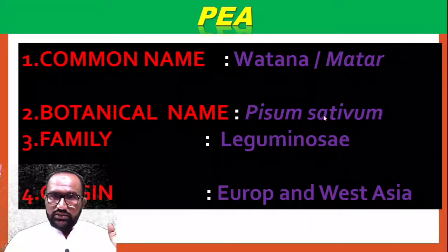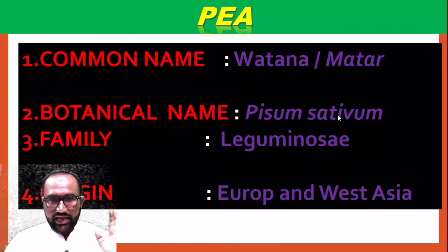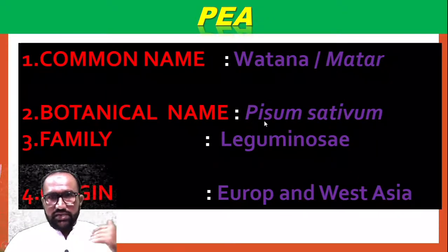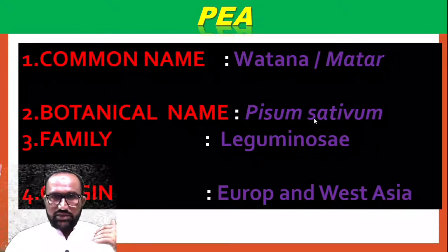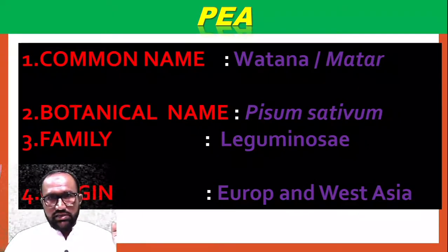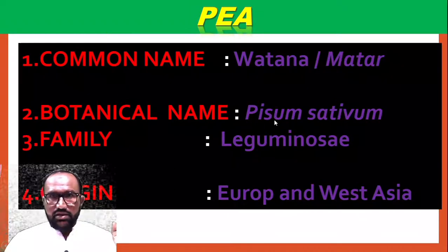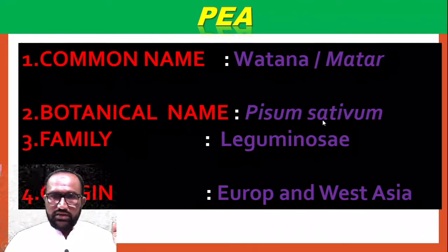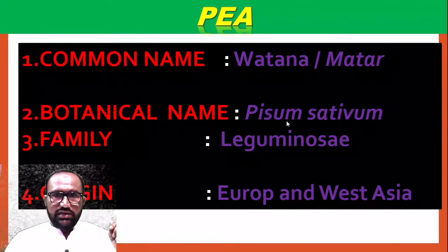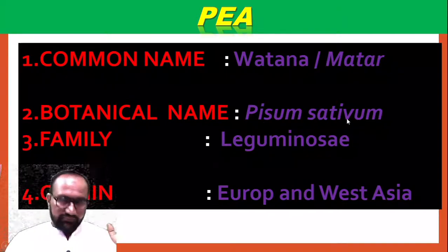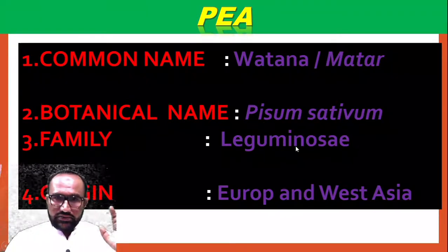Pisum is the genus name and sativum is the species. The genus name should be written in capital letters initially, and the species name in small letters. Both genus and species should be underlined separately.